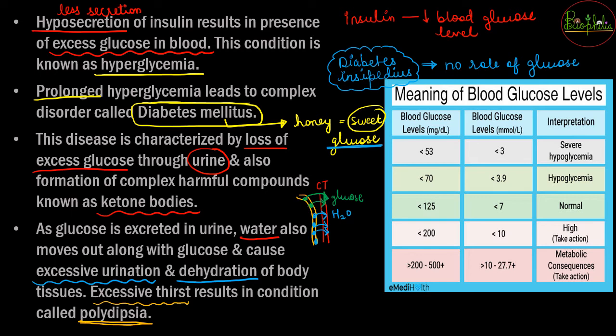Some people, especially older people, take insulin shots. These insulin injections are an artificial supply of the hormone insulin, provided so that the person can maintain their glucose levels and manage the diabetes mellitus condition.